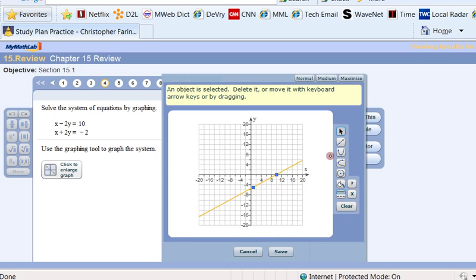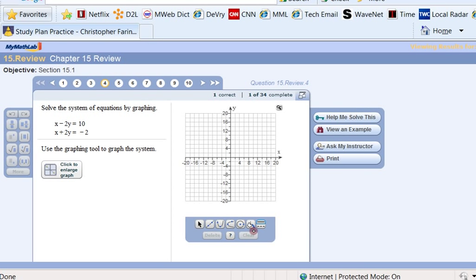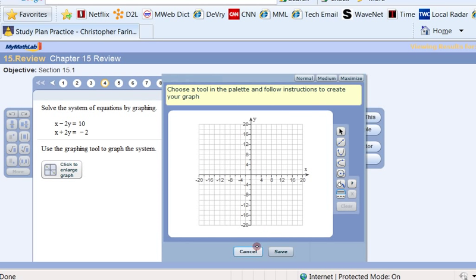And the y-intercept was negative 5. Whoops, I missed that one, so I've got to try it again. Actually, cancel that and try that again. Straight line tool. The x-intercept was 10. The y-intercept was negative 5.